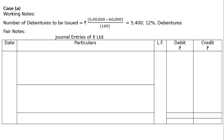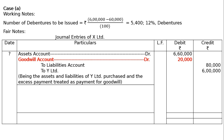Now we draw the journal entries format for X Limited. First journal entry: Assets account debited Rs. 6,60,000; to Liabilities account Rs. 80,000; assets minus liabilities equals Rs. 5,80,000. We are supposed to pay a purchase consideration to Y Limited of Rs. 6,00,000. The excess payment of Rs. 20,000 is treated as goodwill, shown as a balancing figure in red ink.